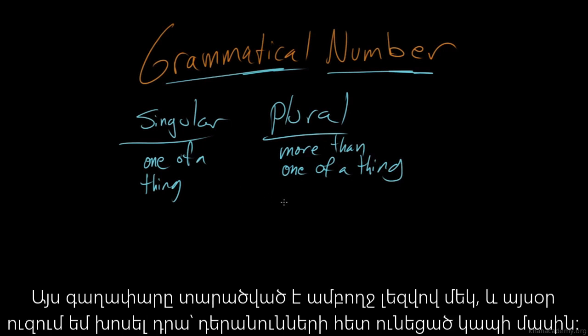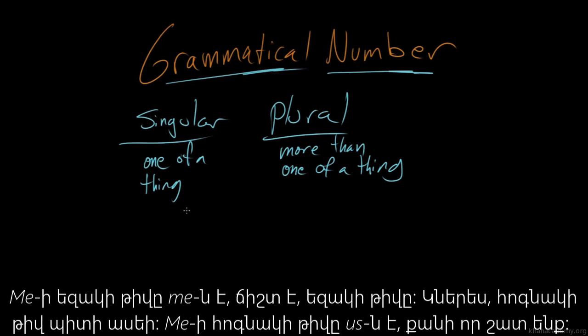And this extends throughout the language and I want to talk about today the way it applies to pronouns. So the singular form of me is me, right? That's the singular form. The plural form of me is us.